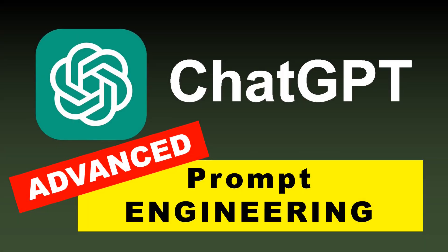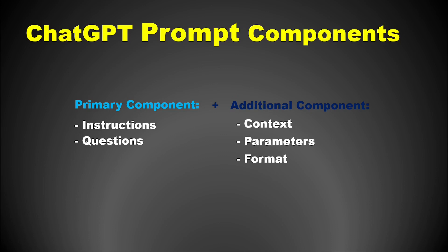Hello and welcome back to ChatGPT prompt engineering tutorial series. In the previous video, we had developed a basic good structure for a ChatGPT prompt, which consists of a combination of at least a primary component which is either instructions or questions, plus one or more of the three components: context, parameters, or format. Today we will take the structure a few steps ahead and add more components to get even more professional or precise outcome.